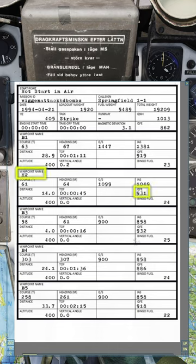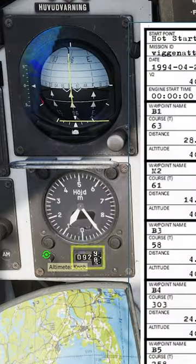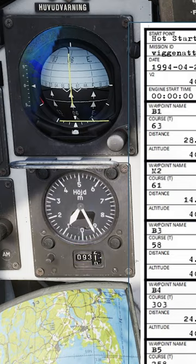Read the QFE of the target from the kneeboard. In this example, the QFE is 931. Set the altimeter pressure to the QFE of the target.